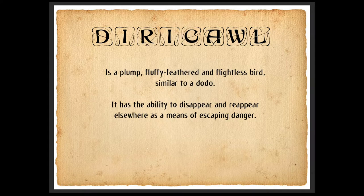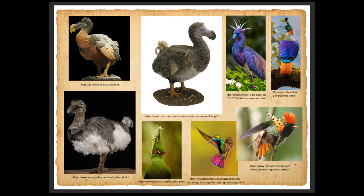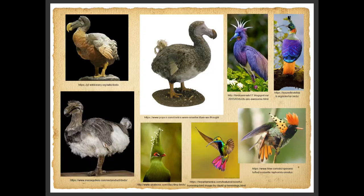The next creature I want to talk about is the Dirichol. This is another one of my favorite characters. The Dirichol is a plump, fluffy, feathered, and flightless bird similar to a dodo. It has the ability to disappear and reappear elsewhere as a means of escaping danger. Right away, as you can tell from the description in the book, it mentions a dodo, so immediately the first reference image I look up is a dodo. I love saying dodo over and over again — I think it's a very cute animal, actually. For those of you who don't know, it is now extinct.